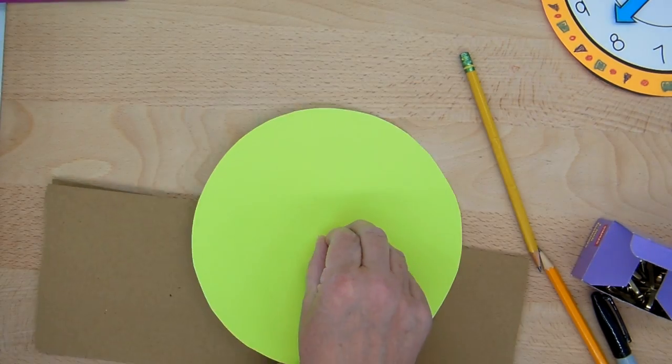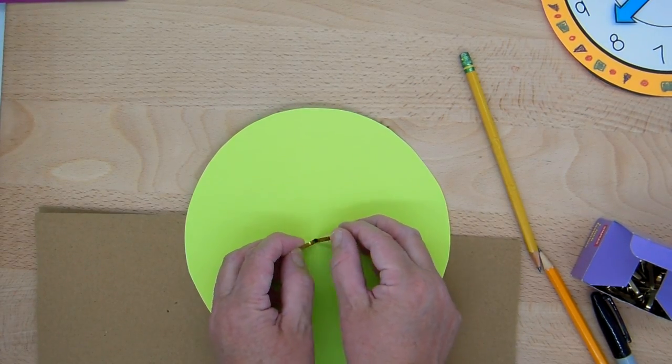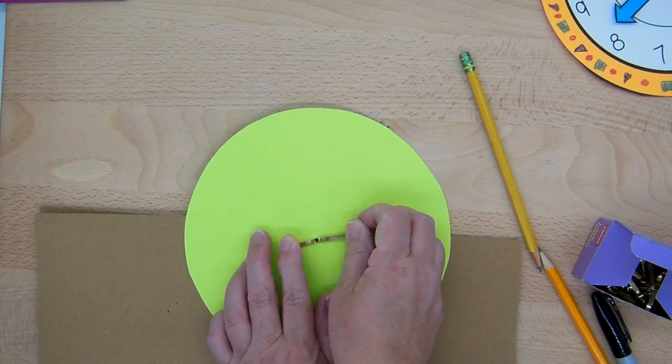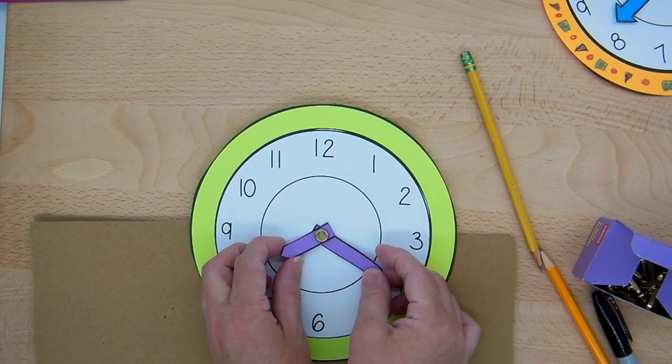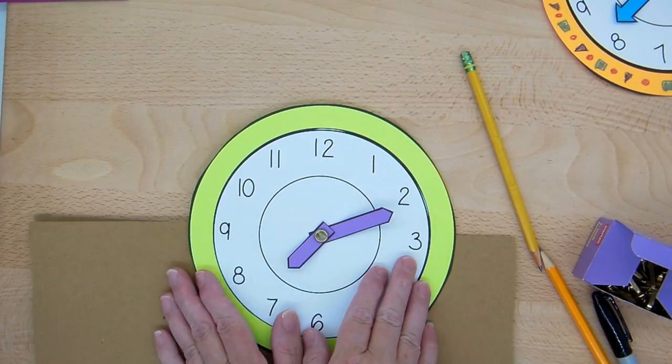I'm going to turn it over to the opposite side and pull back the two prongs on the brass fastener. Now I have an interactive analog clock.